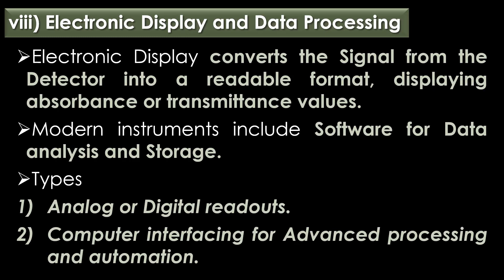Electronic display and data processing: the electronic display converts the signal from the detector into a readable format, displaying absorbance or transmittance values. Modern instruments include software for data analysis and storage. Two types of electronic display are widely used: analog or digital readouts, and computer interfacing for advanced processing and automation.